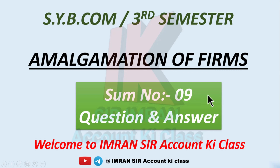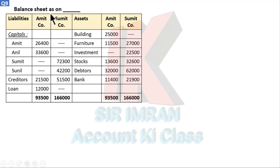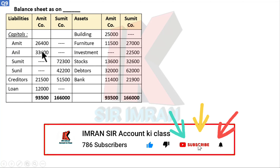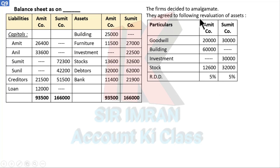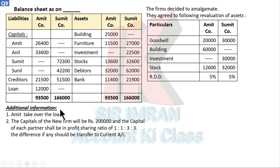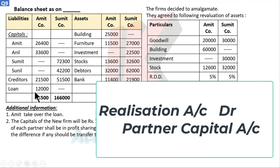Let's move towards question nine. Q9 gives a balance sheet. There are two companies — Amit and Sumit. Amit company has two partners: Amit and Anil. Sumit company has two partners: Sumit and Sunil. Liabilities include creditors; loan is only with Amit company. The firm decided to amalgamate. Assets are revalued: goodwill, building, investment, stock, and RDD — subtract the RDD figure. Additional information: Amit took over the loan, meaning this loan will not go into purchase consideration; pass the entry in the old firm — realization account debit to partners capital account.